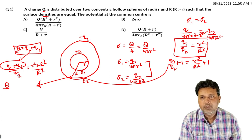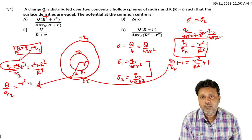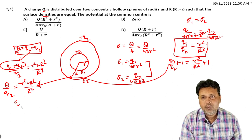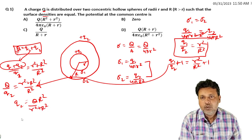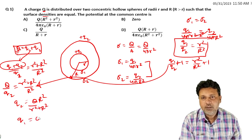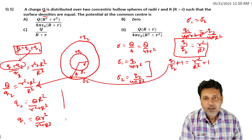Solving for q2: q2 = Q·R² / (r² + R²). Similarly, solving for q1: q1 = Q·r² / (r² + R²). Now let's calculate the potential at the center.